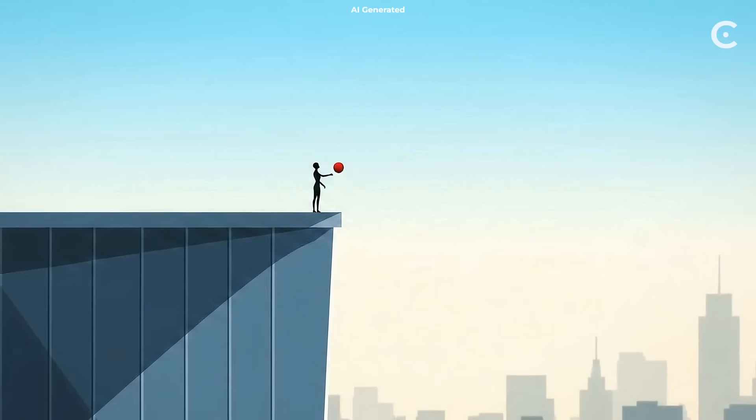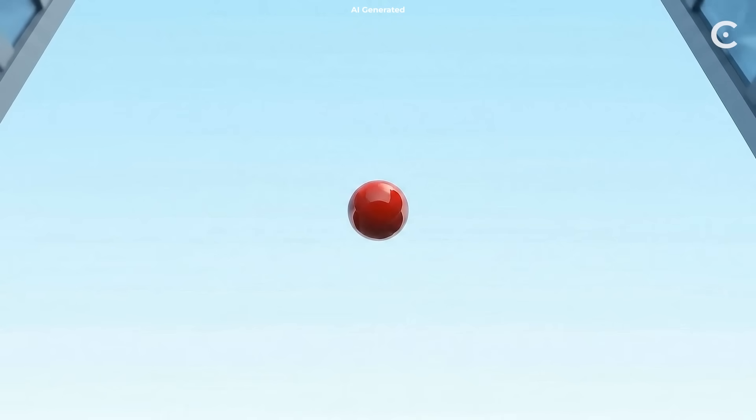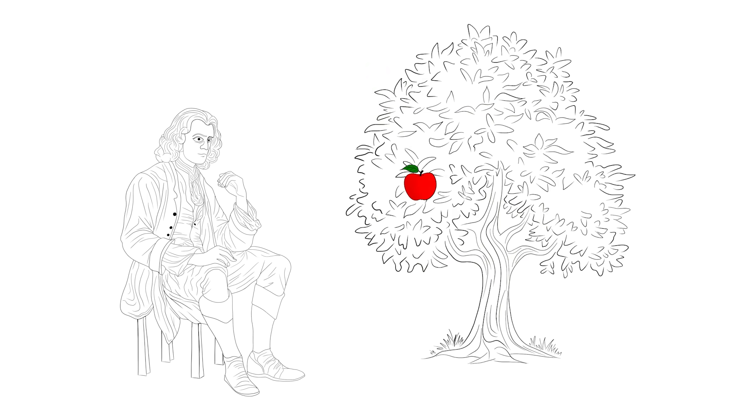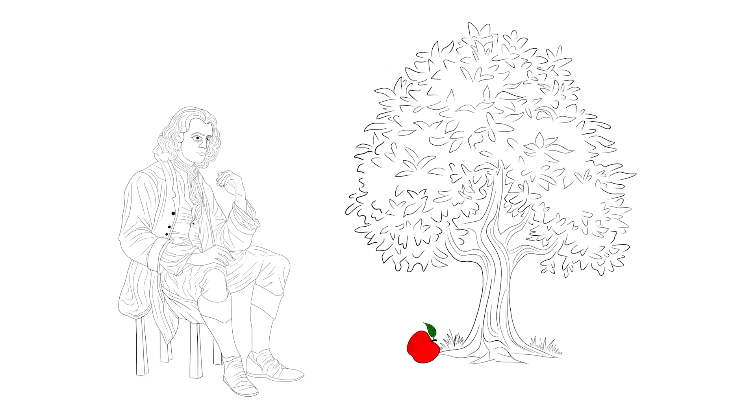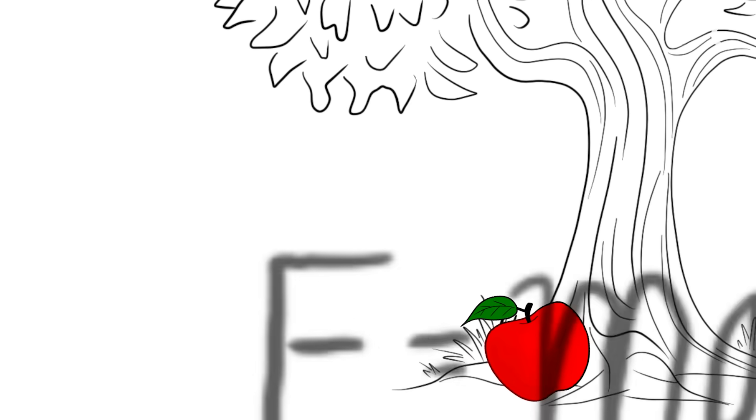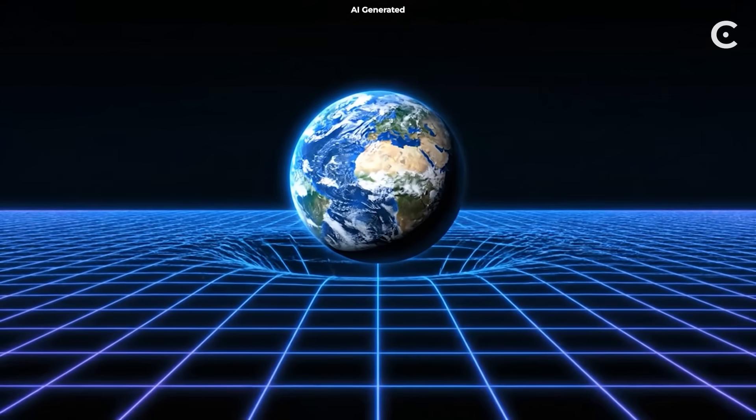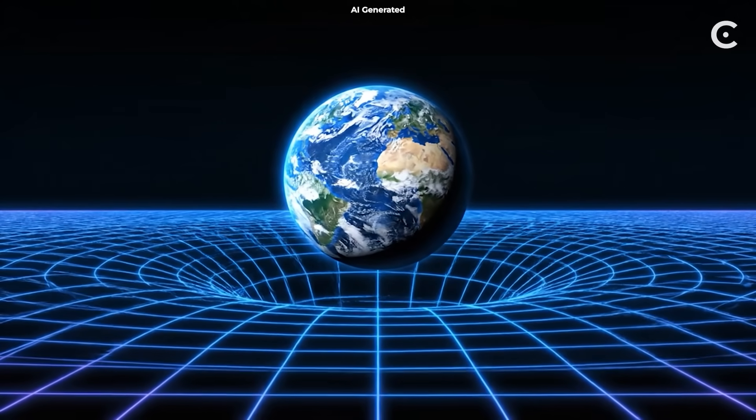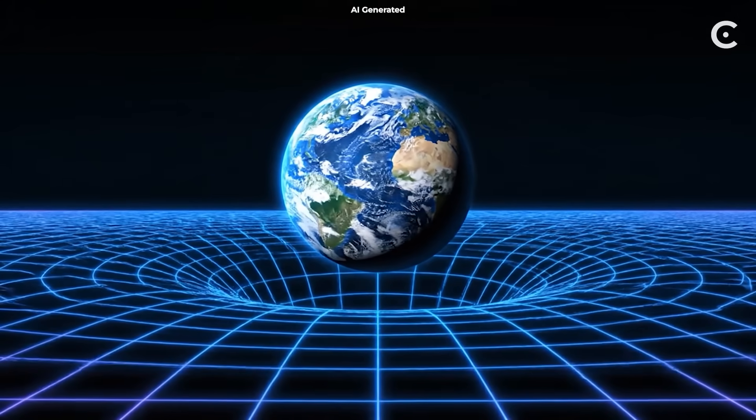Here's something that might blow your mind. Every time you throw a ball, you're seeing Einstein's theory at work. To Newton, it looks like a force pulling the ball down, which works perfectly for everyday calculations. But Einstein showed it's deeper than that. The ball is actually following the straightest path through the curved space-time around Earth.